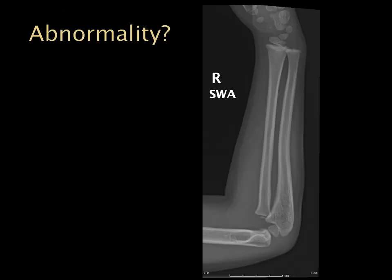We'll end with one more abnormality. Even though it's a forearm x-ray, we still want to make sure that we have radial capitellar alignment — and this is radial head dislocation.